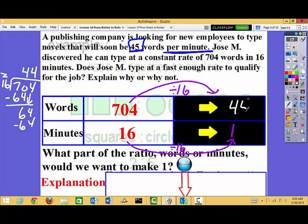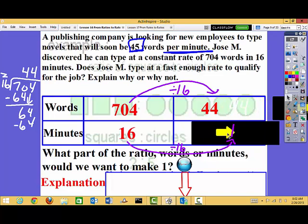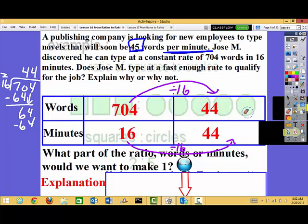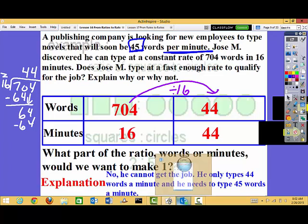So how fast does Jose type? He types 44 words in 1 minute. So what do I know? Well, I know that he's not going to get the job. He can only type 44 words a minute. But how fast does he need to type? He needs to type 45. So unfortunately, if this publishing company is really strict on what they say, he won't be able to take the job. So we better get practicing.